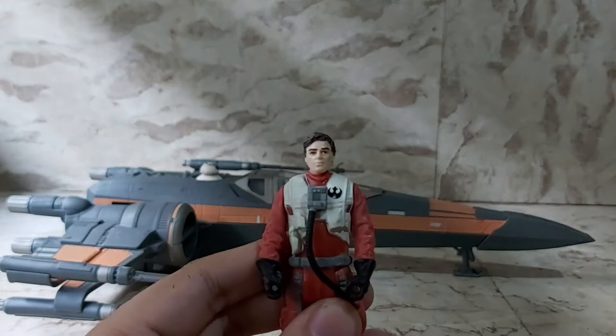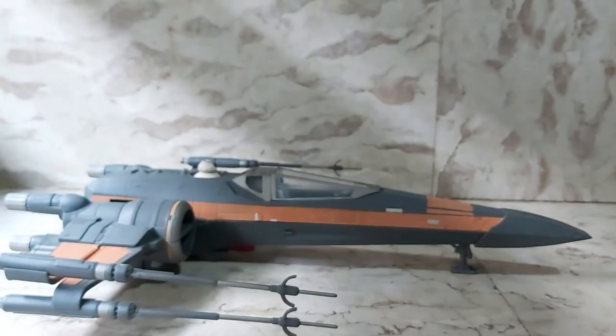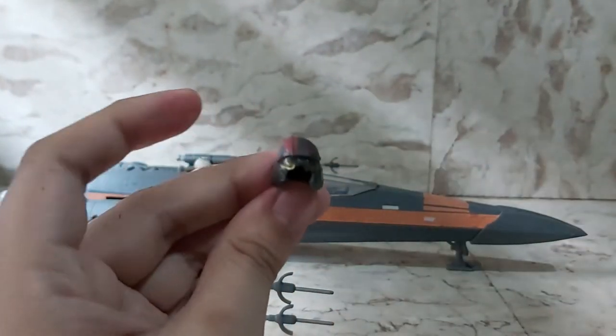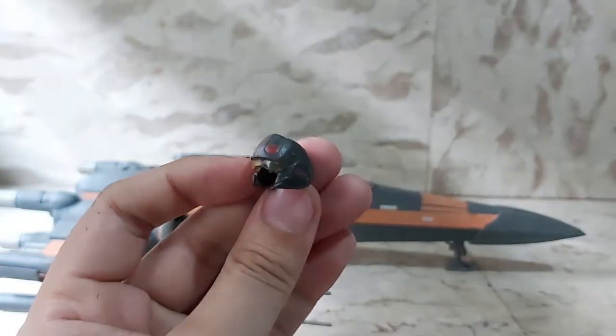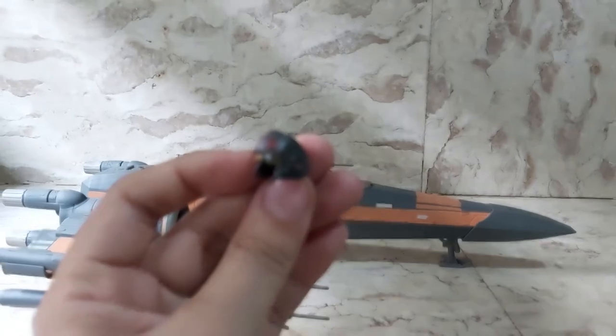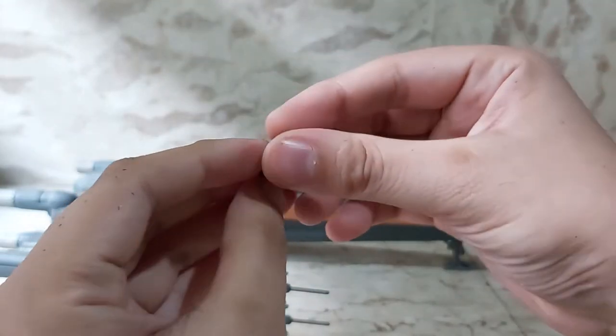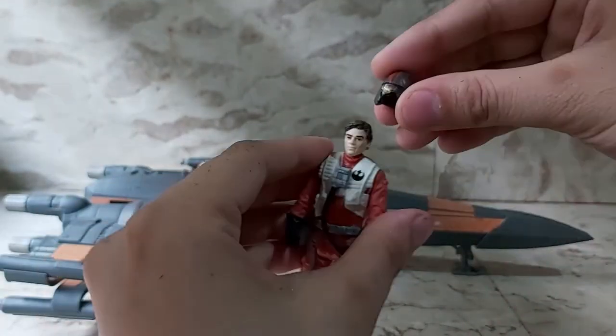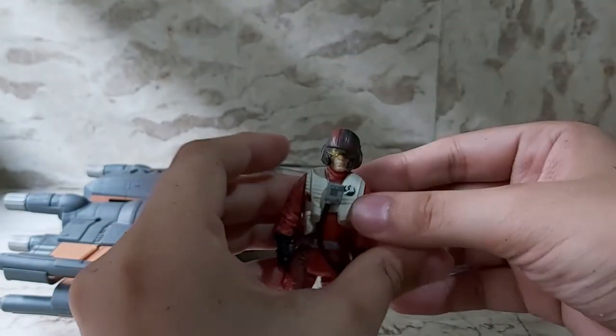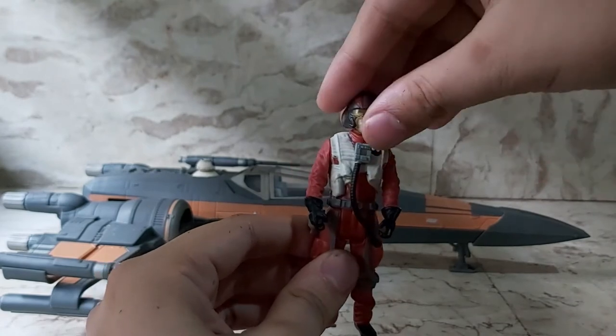It's got that nice little Rebellion symbol over there. Let's take a quick look at his helmet. This is his helmet, it's got an orange visor and a Rebellion symbol right there as well. Pretty good sculpt, pretty good helmet, fits snugly to his head.